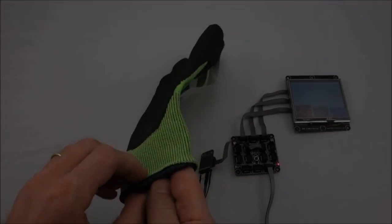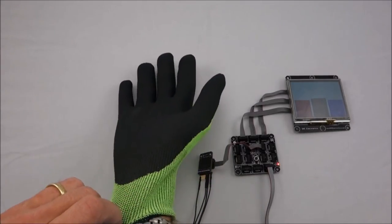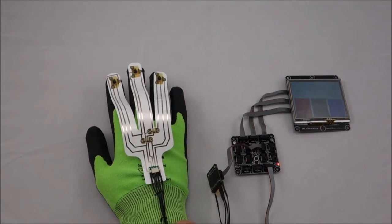A separate microcontroller with a display is used to read the accelerometer values and show the angle of each finger with respect to gravity.